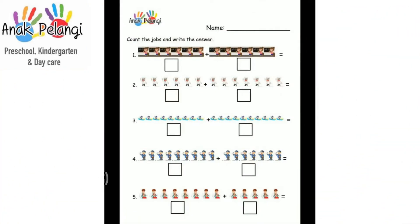Check the video out. Count the groups and write the answer. Number 1. Count the group of these pictures. There are 1, 2, 3, 4, 5, 6. Write 6 in the box.